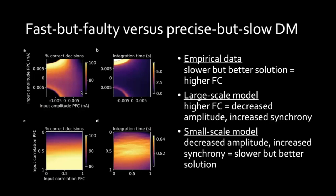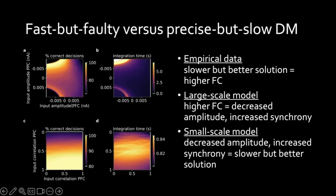We tested this in the winner-take-all decision-making circuit: decreasing the amplitude gives more correct decisions and a higher integration time. Increasing the synchrony of neural background activity going into both populations shows that there is a certain sweet spot of intermediate synchrony — not fully synchronized and not totally unsynchronized — where information seems to be most efficiently processed. This showed that decreased amplitude and increased synchrony leads to a slower but better solution.